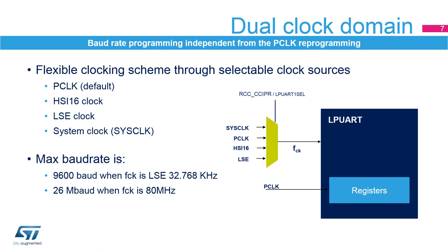The LPUART has a flexible clocking scheme. Its clock source can be selected in the RCC and can be either the PCLK, which is the default clock source, or the HSI-16, LSE, or system clock. The registers are accessed through the APB bus, and the module is clocked with FCK, which is independent from the APB clock. The maximum baud rate that can be reached is 9,600 baud when the clock source is LSE, and 26 megabaud when the clock source is at 80 MHz.